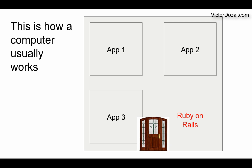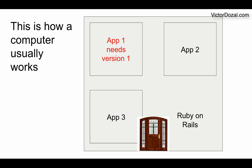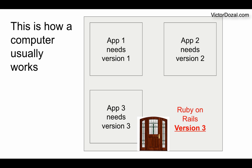Imagine all three of the applications on this computer use the Ruby on Rails framework. But what happens if application 1 needs Ruby on Rails version 1, application 2 needs Ruby on Rails version 2, and application 3 needs Ruby on Rails version 3?